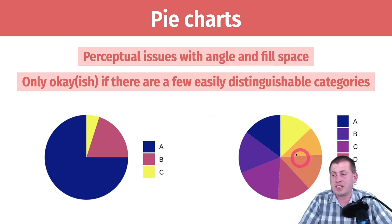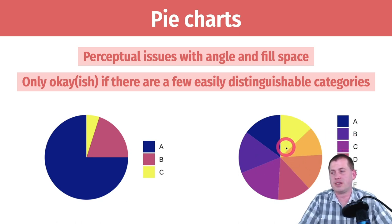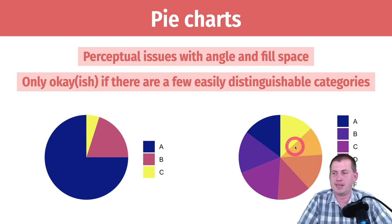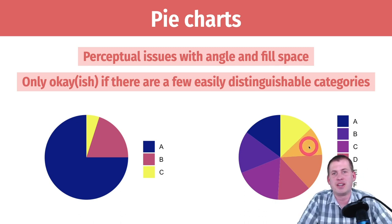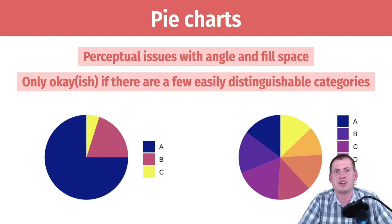In the bad example, each of these slices is a different value — they're all kind of around 18 to 22. But good luck figuring out which ones are the biggest and which are the smallest. It's impossible to tell. So don't do pie charts when there are this many categories; it's not going to work.